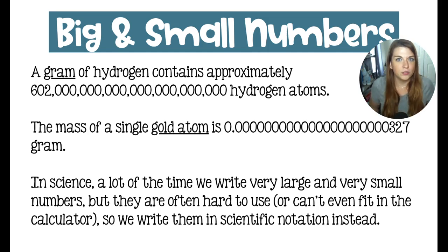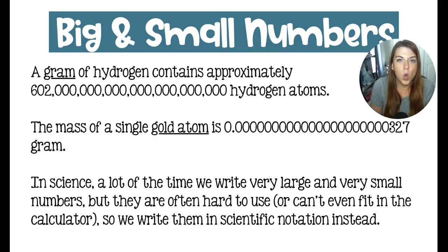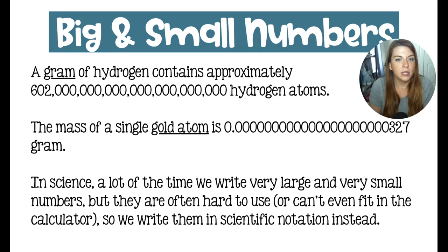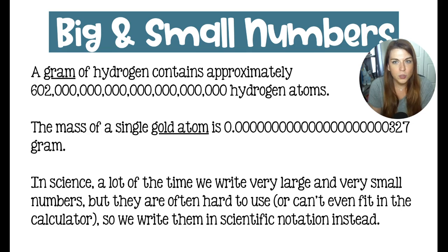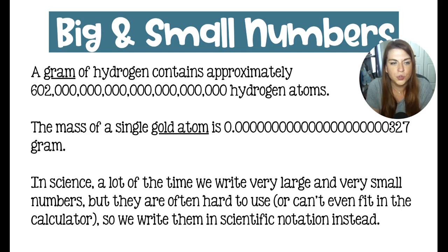We use very large and very small numbers all the time in science. For that reason, we use scientific notation to write them, because number one, there is a maximum amount of numbers that can fit in your calculator, and number two, the more zeros you're writing or putting in the calculator, the more error you are subject to — the easier it is to make a mistake. We also use scientific notation to save us on the number of significant figures occasionally when we have some funky measurements.